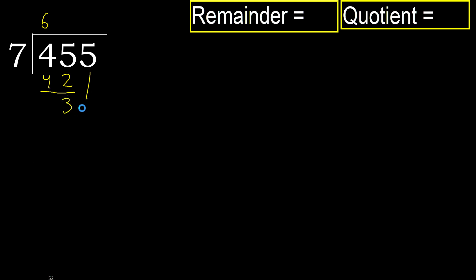Next, bring down 5, giving 35. 7 multiplied by 6 is greater, so try 7 multiplied by 5, which gives 35 — not greater. 35 minus 35 equals 0.